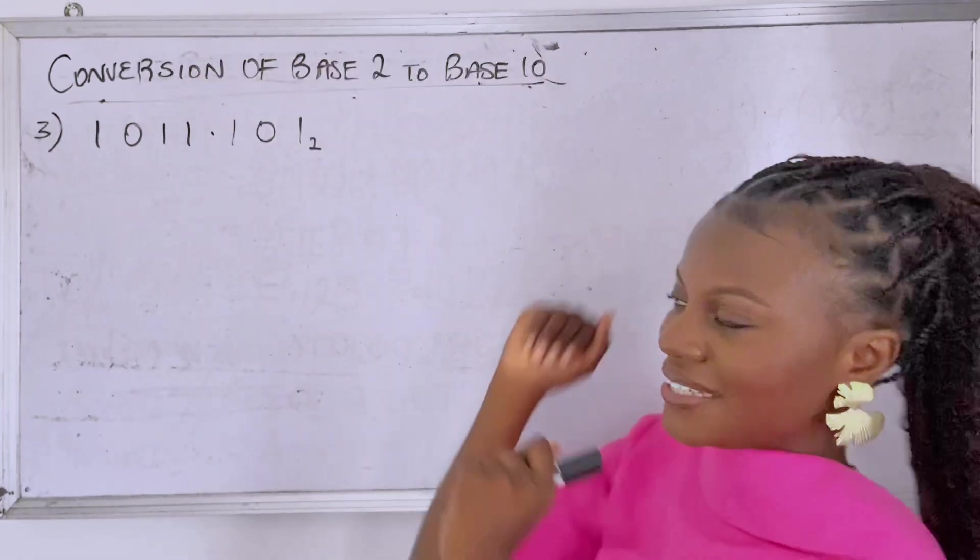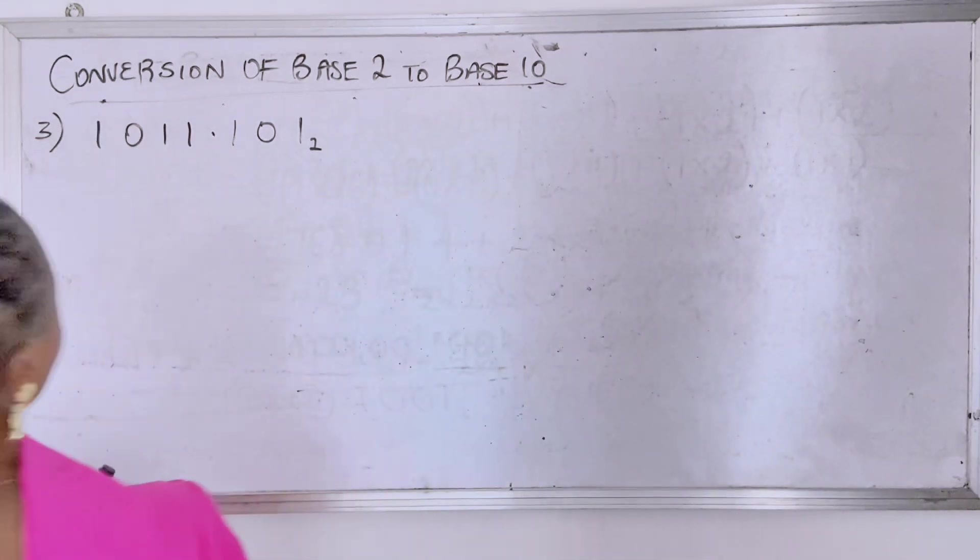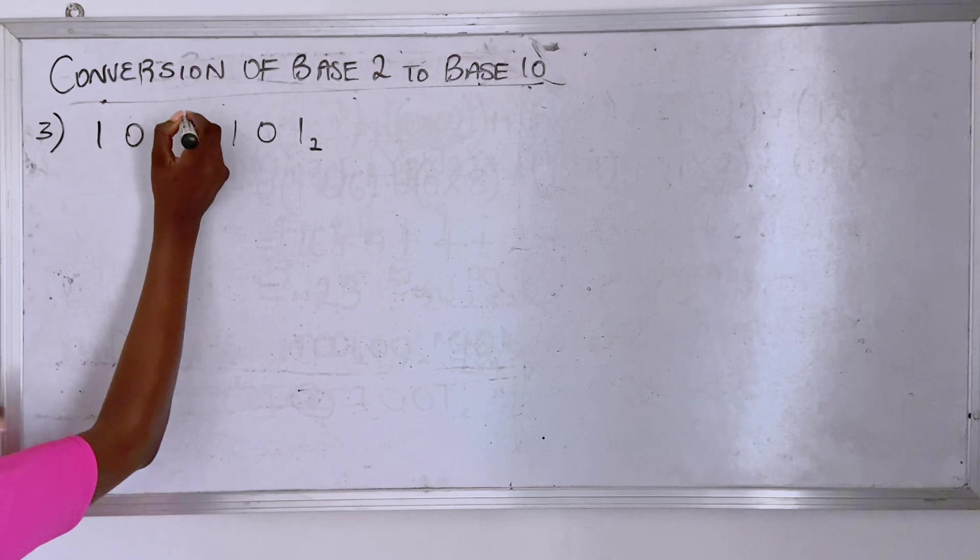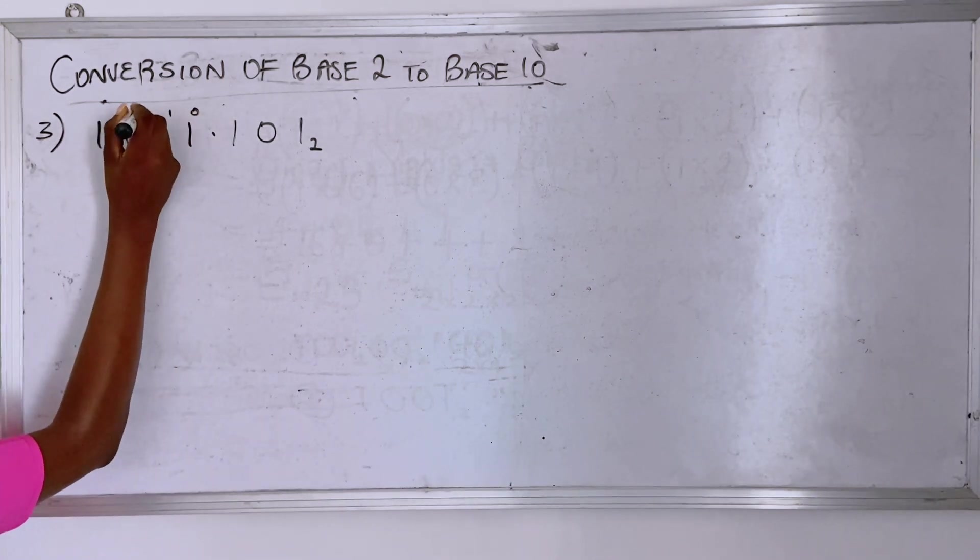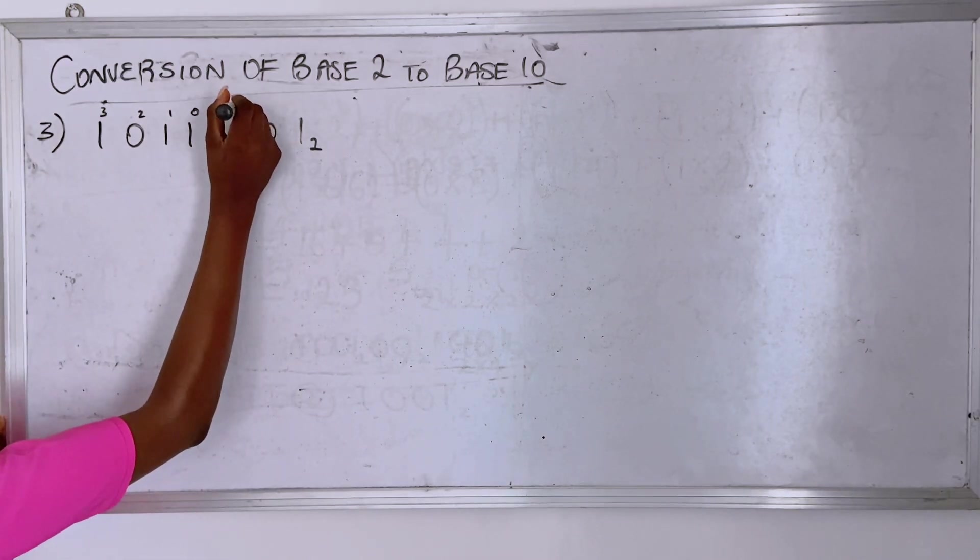Let's see how to tackle this. Before the decimal we've always done this where we just put zero, one, two, three. Now after the decimal, there comes your minus one, minus two, minus three.